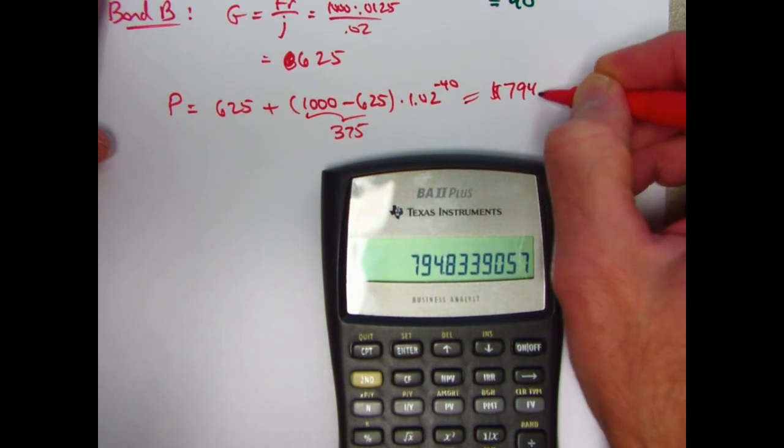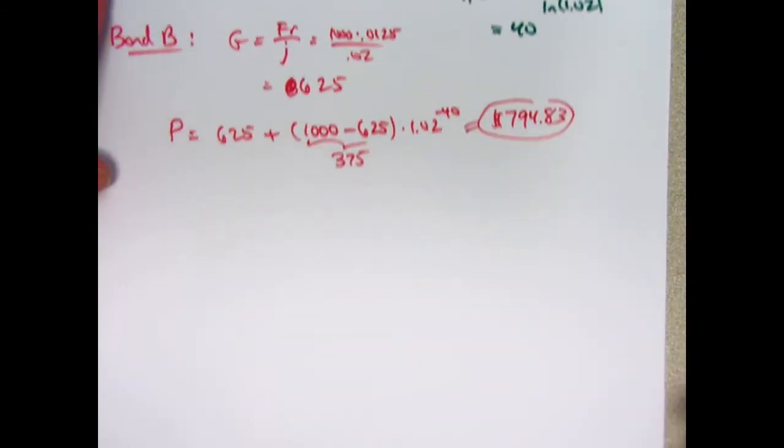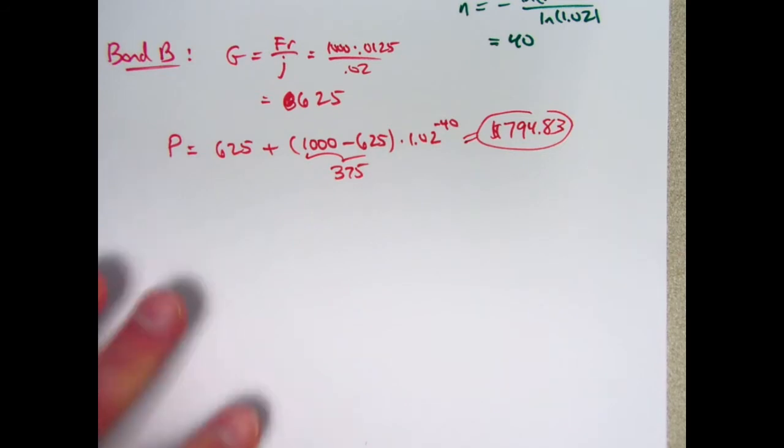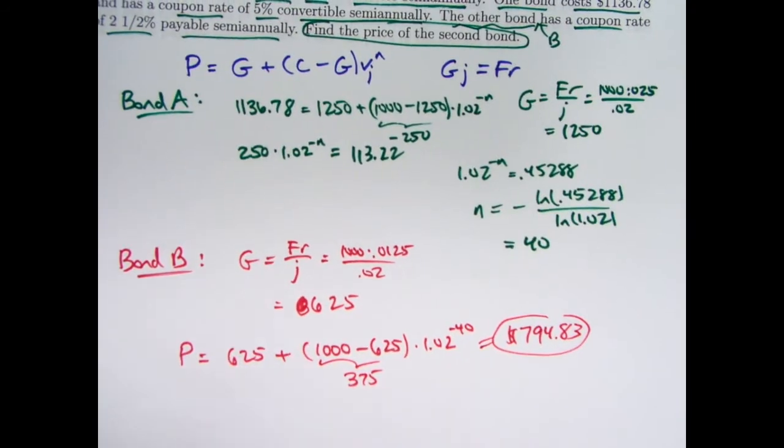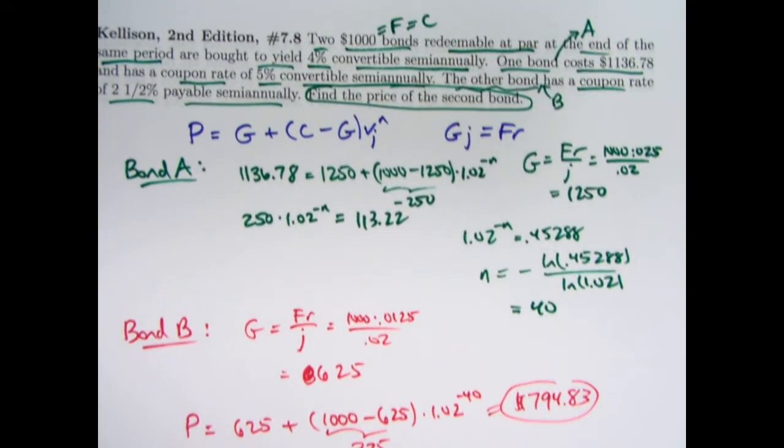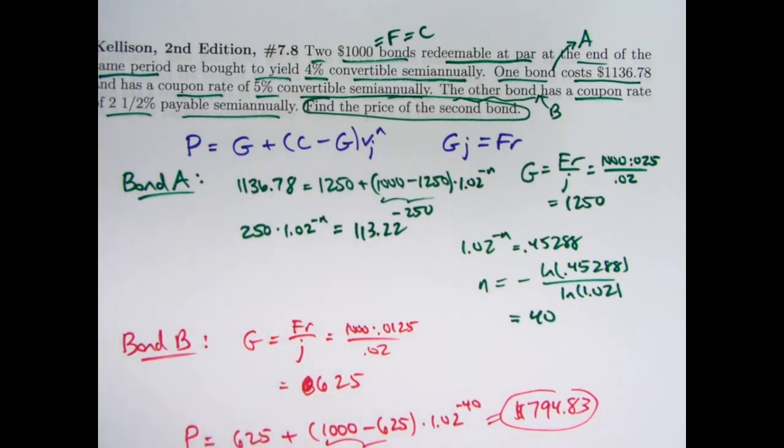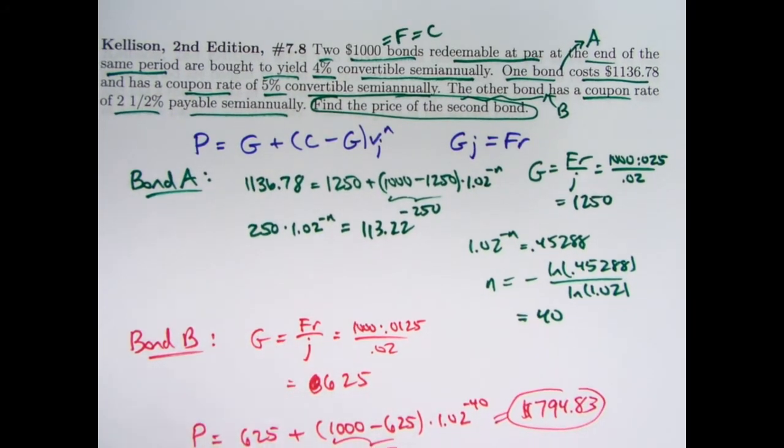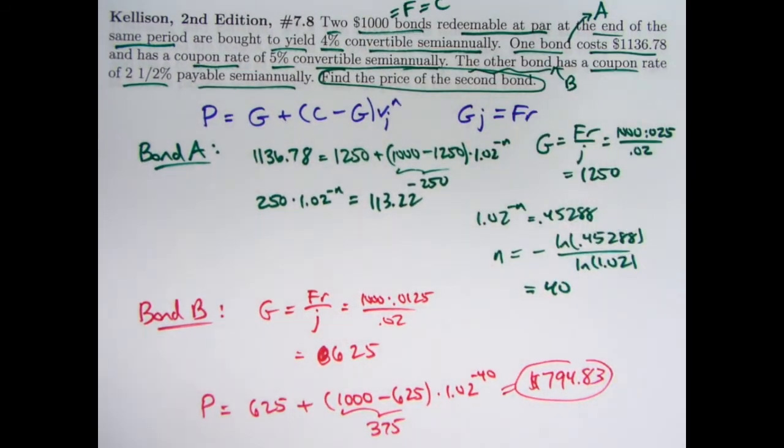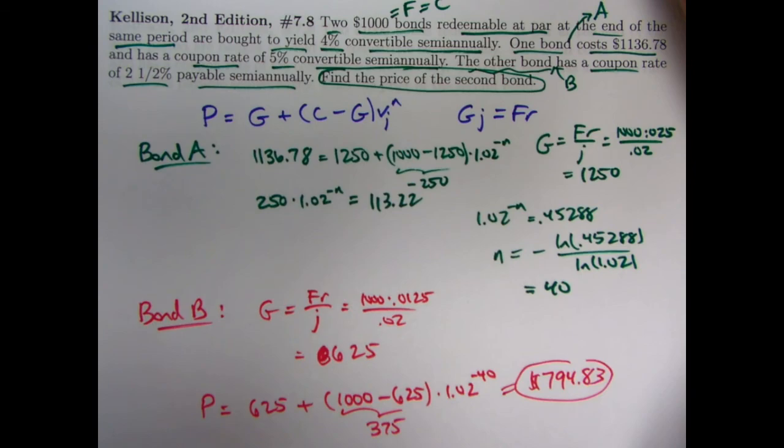794.83 is the right answer for the price of bond B. We note that bond A is selling at a premium higher than the redemption amount C. Bond B is selling at a discount lower than the redemption amount C. But we use the base amount formula again to make it as easy as possible to solve for n. Now, you could try this problem with the other formulas, but I think this is probably the best formula to use in this situation.